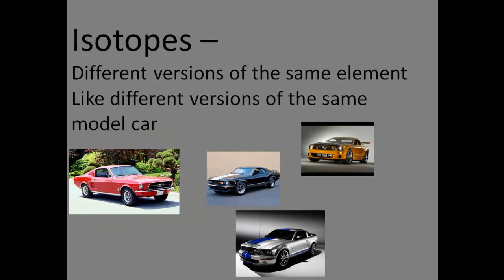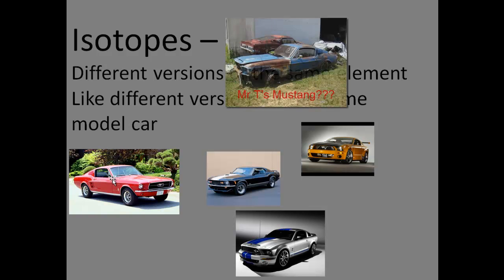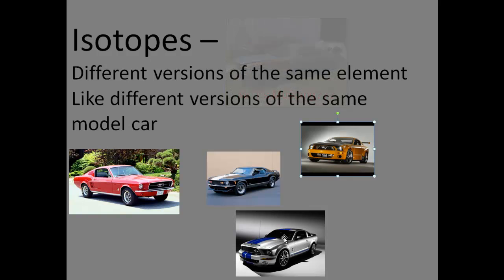And all an isotope is, is different versions of an element. And it's kind of like different versions of the same model car. So if you take a look, you see all four of these are different Mustangs, each of them obviously different, different years, maybe different engine size, maybe different transmissions, whichever the case, they're different, but they're all Ford Mustang. So they're different, but they're kind of the same too.